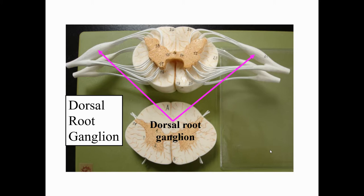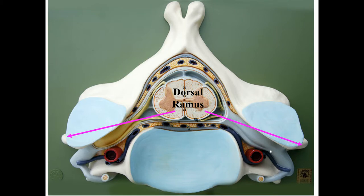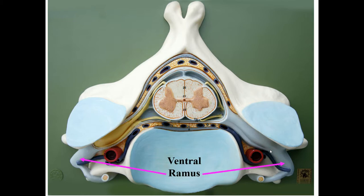As discussed in lecture, the ganglion is where the cell bodies of sensory neurons are located. Moving away from the spinal cord along the nerve, it splits again — but these are not roots, they are rami (ramus means branch). There is a dorsal ramus and a ventral ramus.